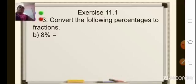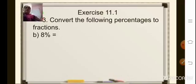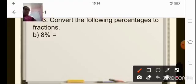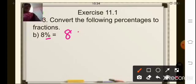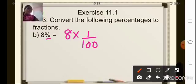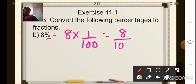Now convert the following percentages to fractions. The first one is 8 percent — you have to convert it into a fraction. So first you will remove the percent symbol, and then write it as 8 into 1 upon 100. To convert the percentage to fraction, you multiply by 1 upon 100. Now 8 into 1 is 8 upon 100, and you can still reduce this.